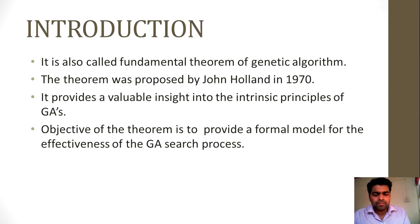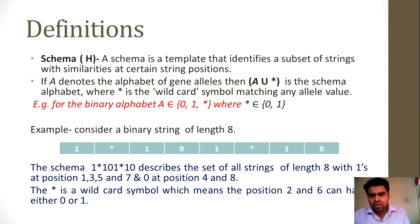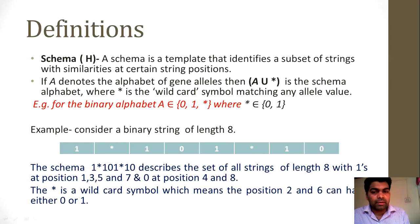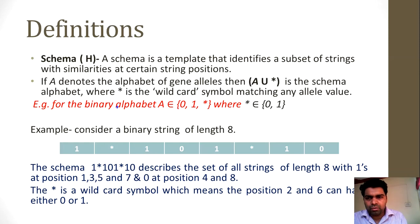If A denotes the alphabet of genes (alleles), then A union asterisk is the schema alphabet, where asterisk is the wild card symbol matching any allele value. The schema H is basically a template that identifies a subset of strings with similar characteristics at particular positions.